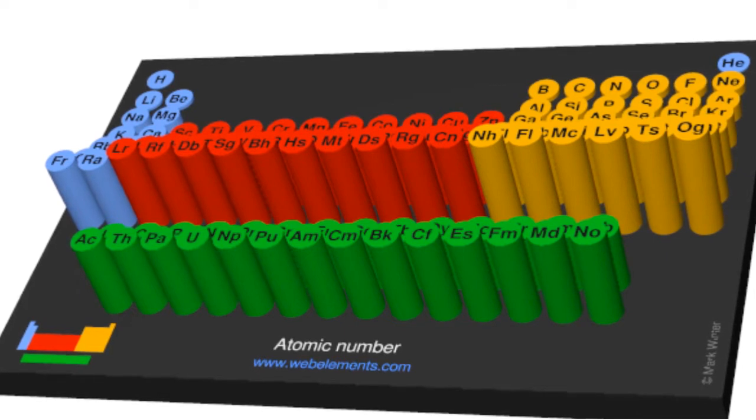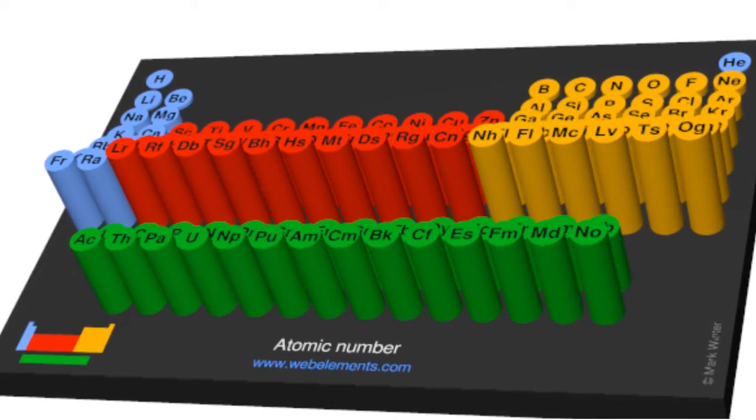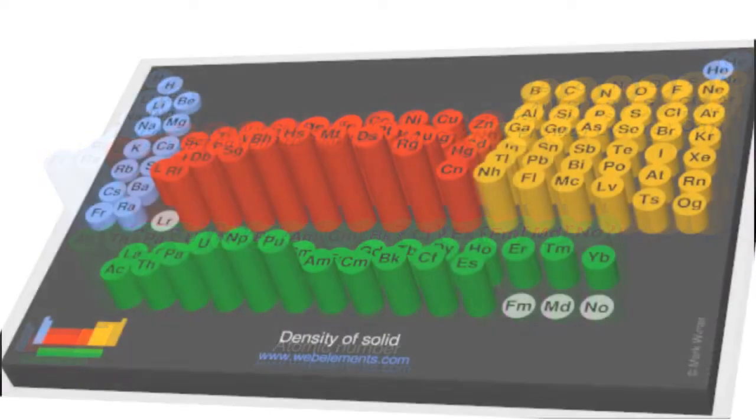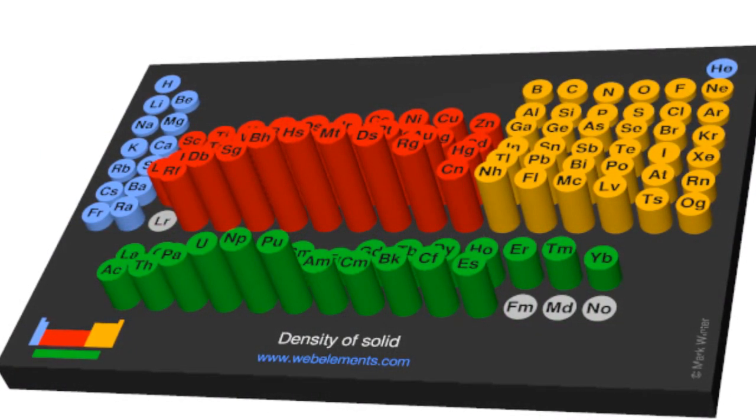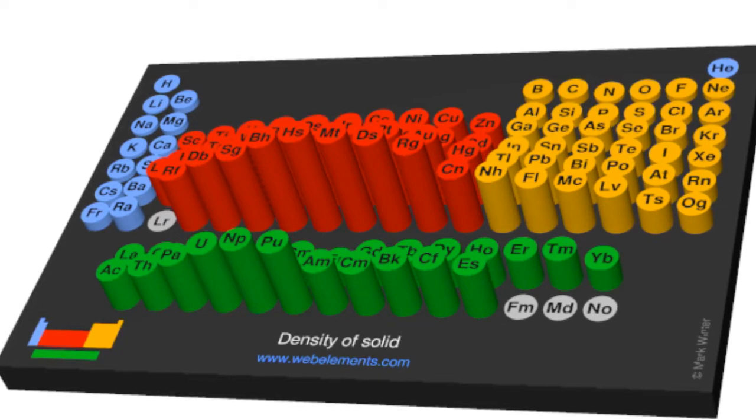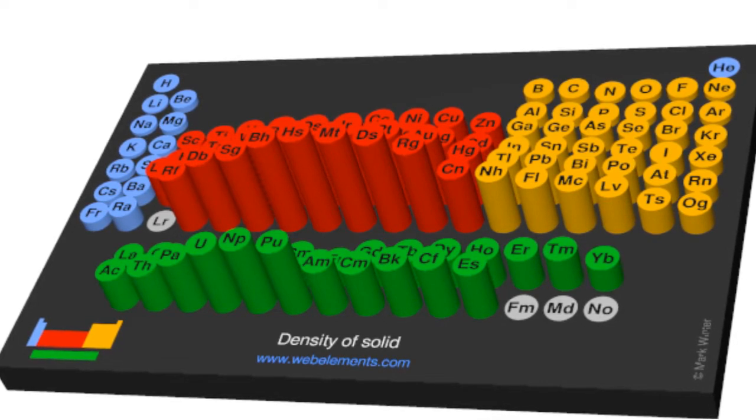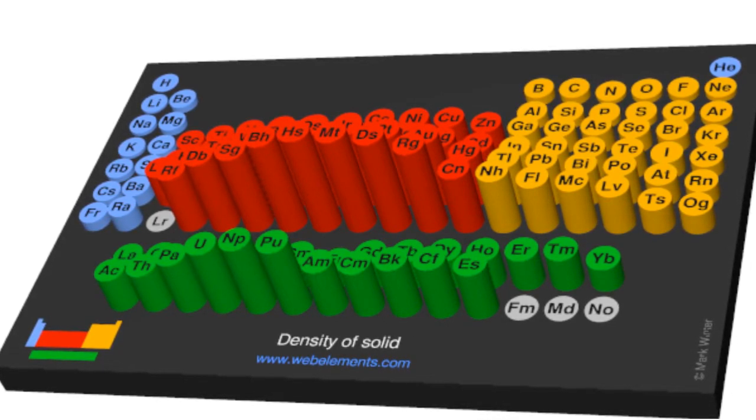But he was then able to spot very clear gaps where missing elements were. A fantastic example of Mendeleev predicting correctly the properties of missing elements and thus giving his periodic table credibility was gallium.